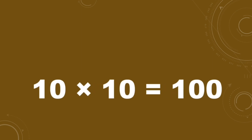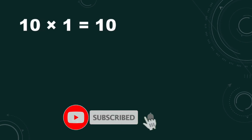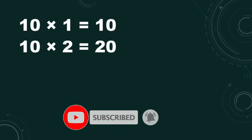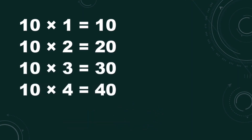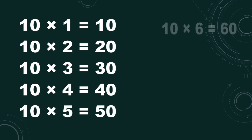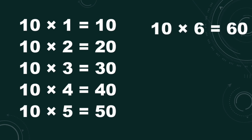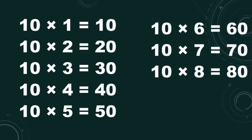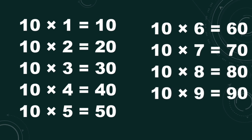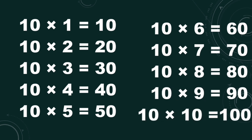Ten ones are ten, ten twos are twenty, ten eights are eighty, ten tens are one hundred. Thank you.